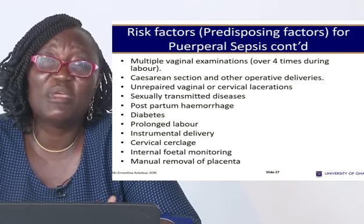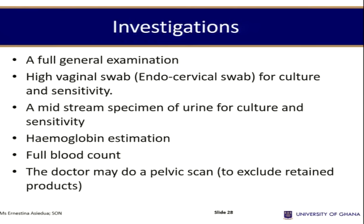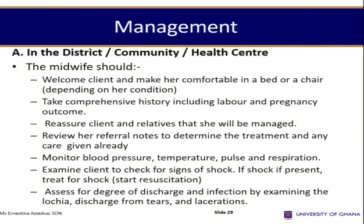Additional risk factors include multiple vaginal examinations, caesarean section, and manual removal of the placenta. Investigations include full general examination, high vaginal swab, midstream urine specimen for culture and sensitivity, hemoglobin estimation, and pelvic scan to detect any retained products in the uterus. At the district level, take a comprehensive history; if the woman reports discharge, assess its degree, color, odor, and amount.